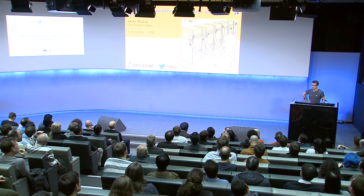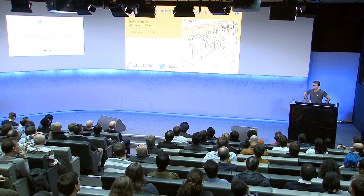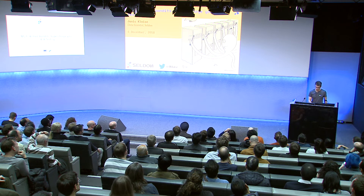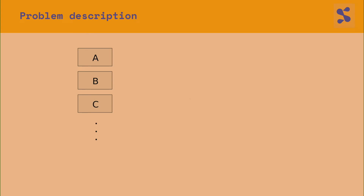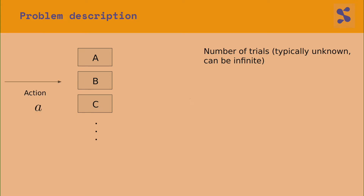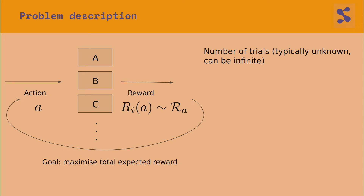There are many ways you can think about multi-armed bandit problems. One way I want to introduce it is as almost an extension to A-B testing. So what's a multi-armed bandit problem? It's a decision problem. You as a decision maker have a number of discrete choices and some number of trials — typically unknown, can be infinite. At each trial you pick exactly one choice called an action A, and you get a reward associated to that action, which comes from a reward distribution specific to the action you chose.